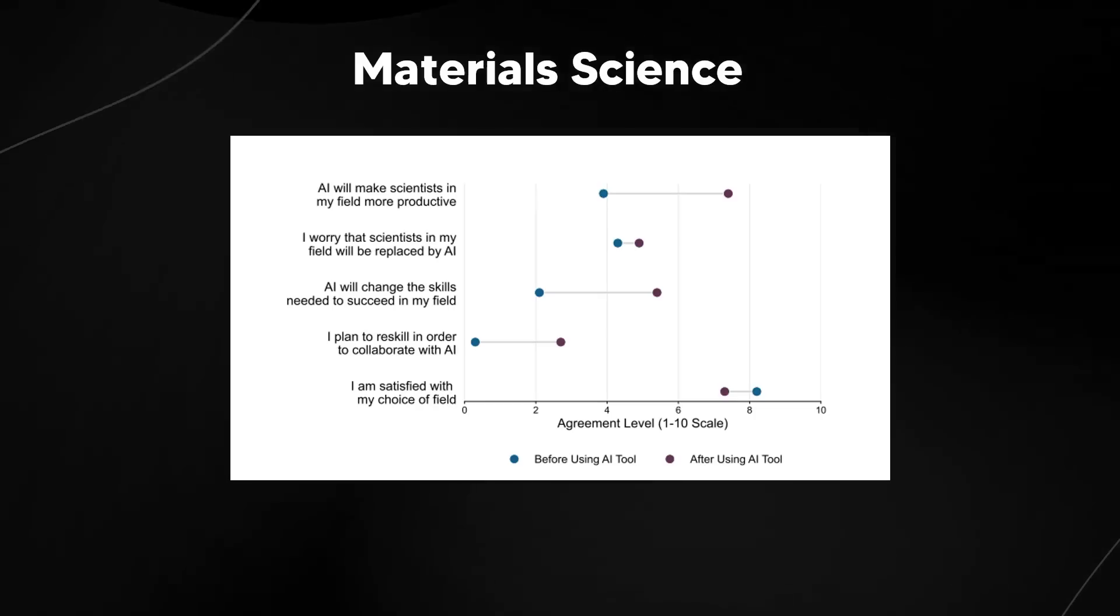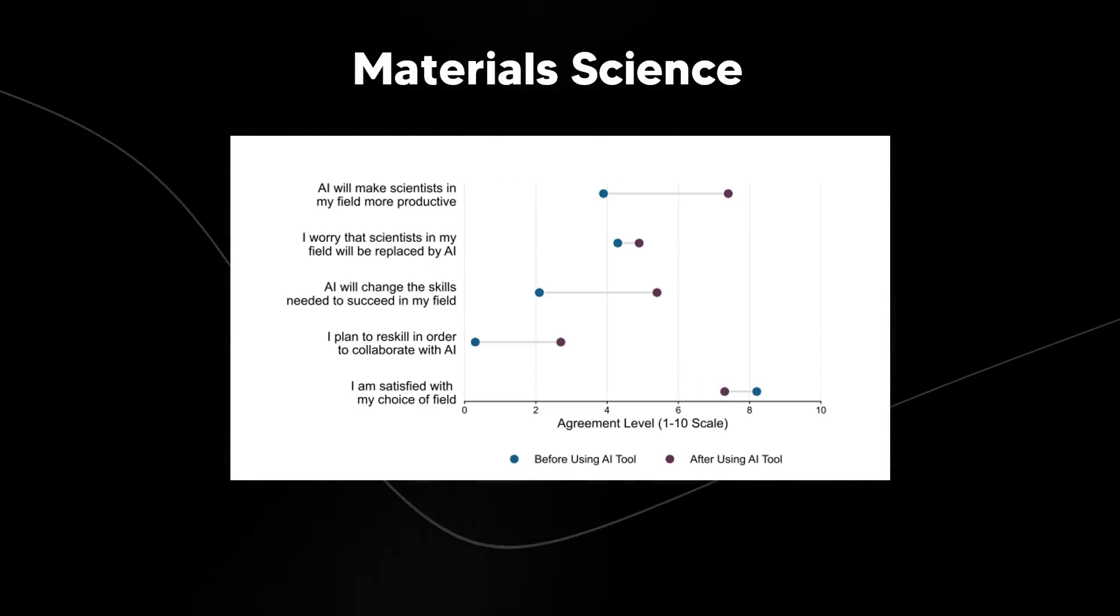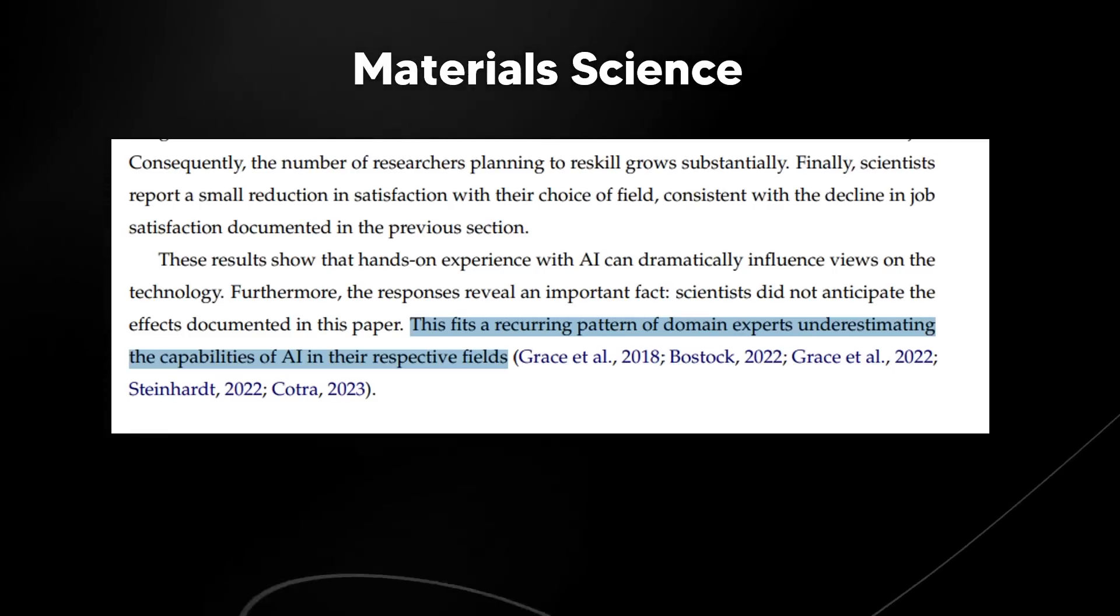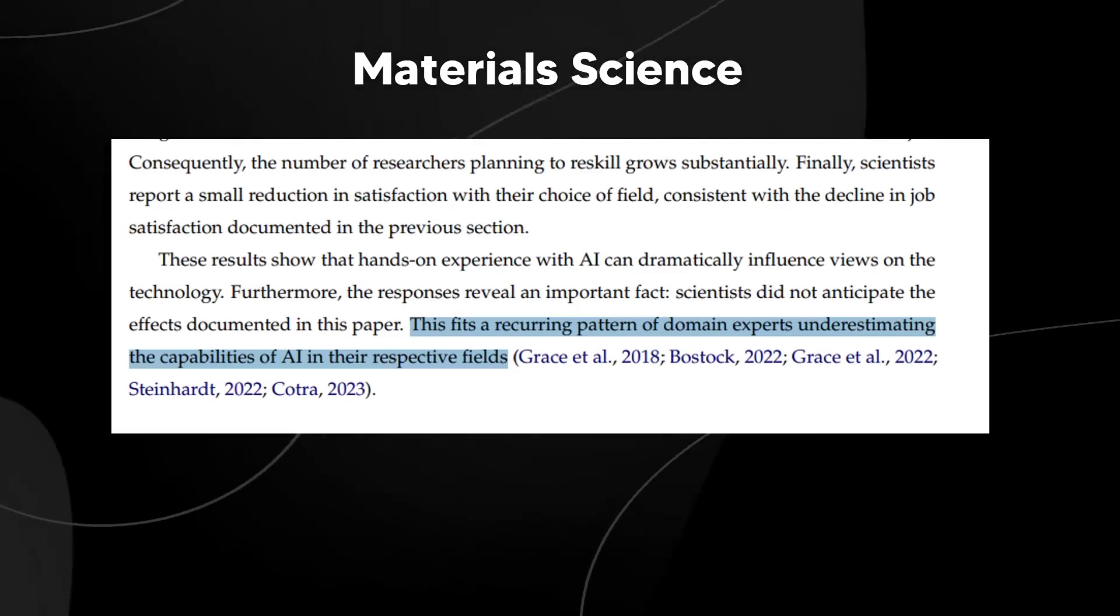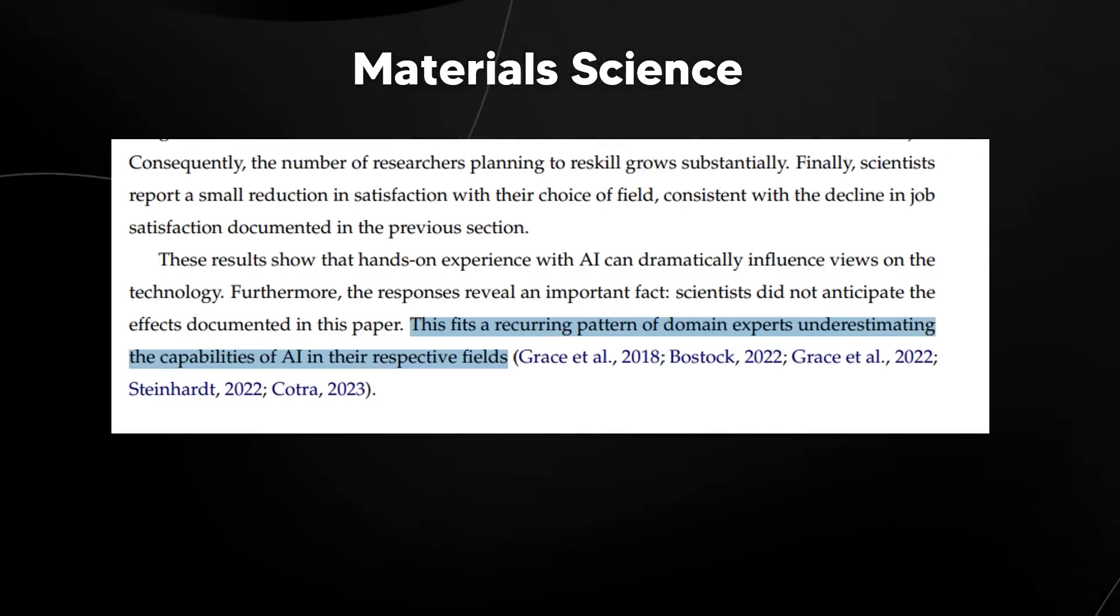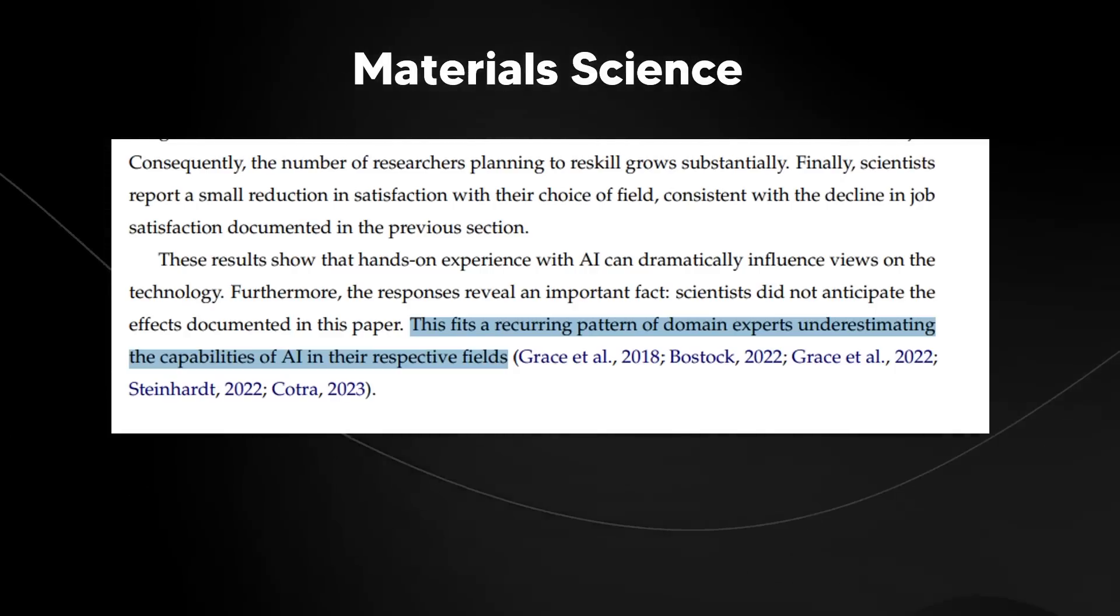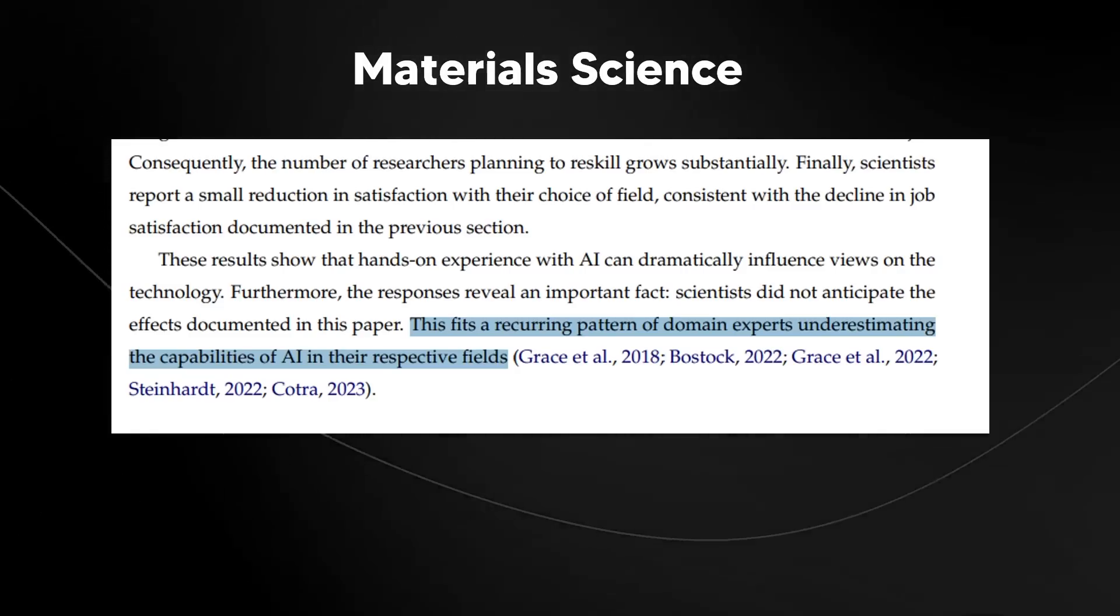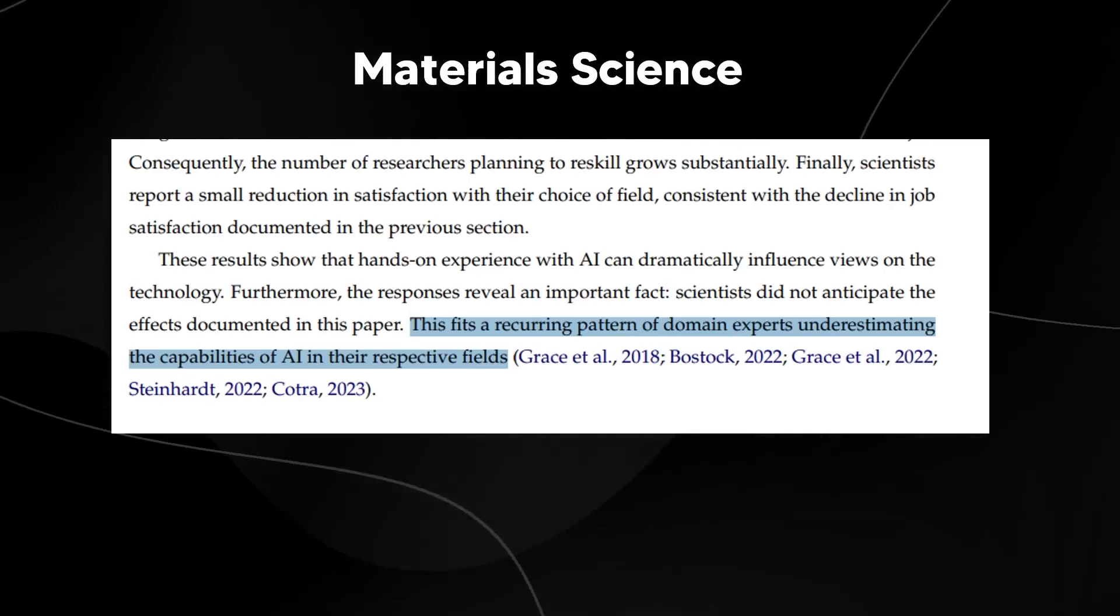Overall, showing that once individuals start to use these tools, they realize how productive they are, but potentially they're diminishing roles for the future. Interestingly, what we actually did see here, it says consequently the number of researchers planning to reskill grows substantially. Finally, scientists report a small reduction in satisfaction with their choice of field, consistent with a decline in job satisfaction. These results show that hands-on experience with AI can dramatically influence views on the technology. Furthermore, the responses reveal an important fact. Scientists did not anticipate the effects documented in this paper, and this fits a recurring pattern of domain experts underestimating the capabilities of AI in their respective fields. The majority of people that don't interact with AI tools will underestimate their capabilities until they use them.